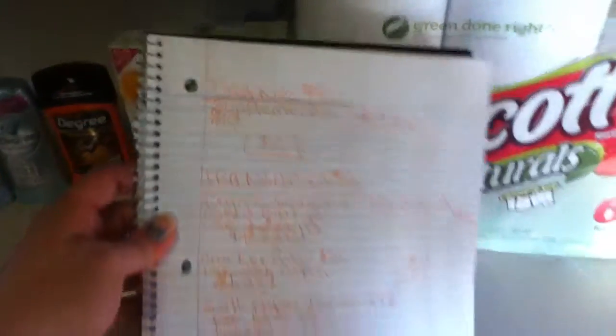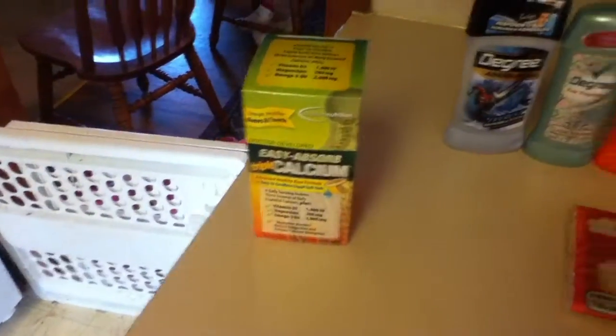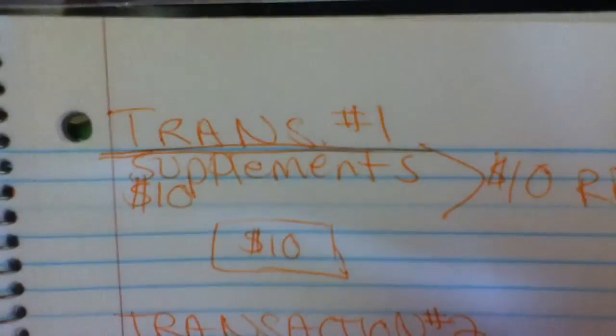If you could read my handwriting, this is what my list usually looks like. I have transaction number one, and I have the supplements, and they're on sale for $10. So you pay $10 and then you get $10 register rewards. I have all the register rewards written on the sides, so I know what I'm getting.